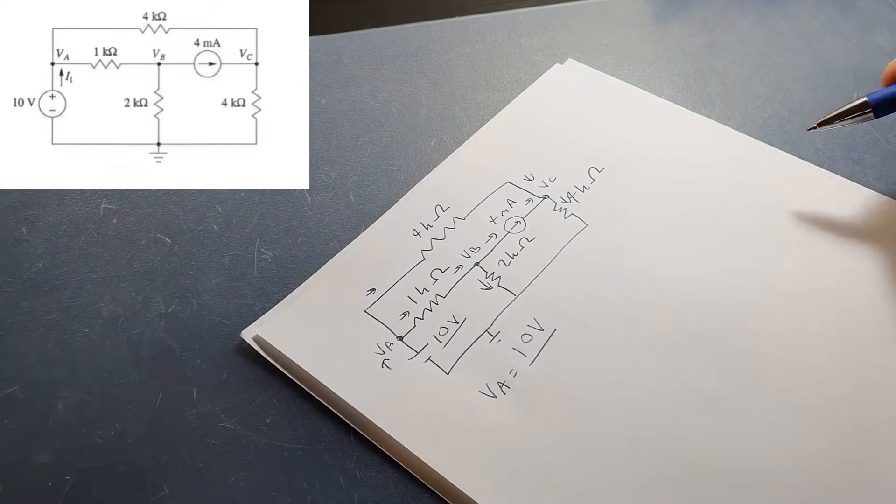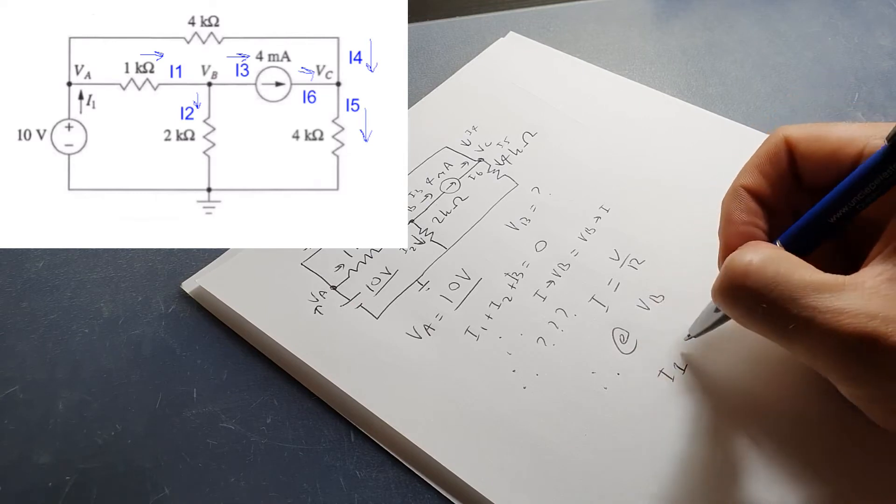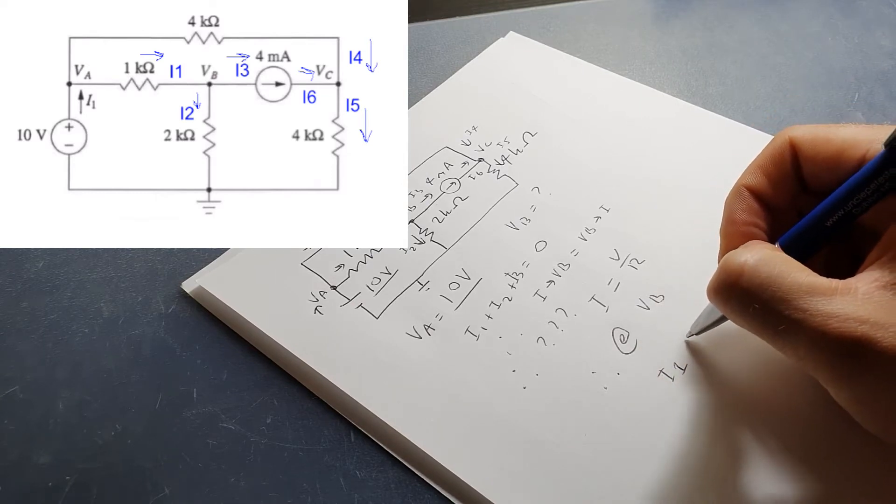Look, the first one, VA, is easy, it's been given to us. But what about the voltages at VB? Well, remember what I said about junctions, all of them must add to zero.